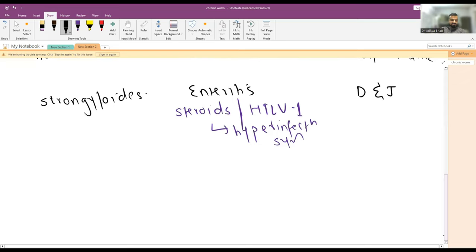The next is Enterobius vermicularis, also known as pinworm. Enterobius usually causes anal pruritus and usually lives in the colon.